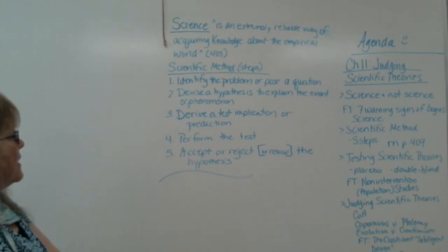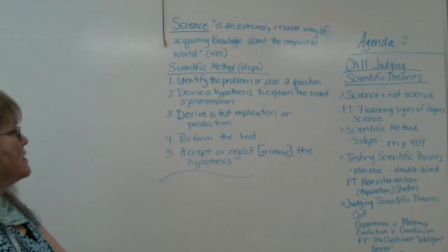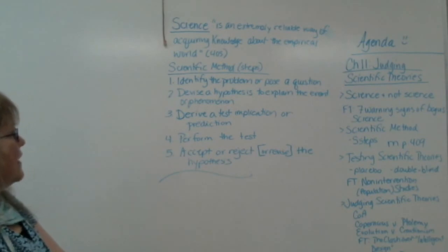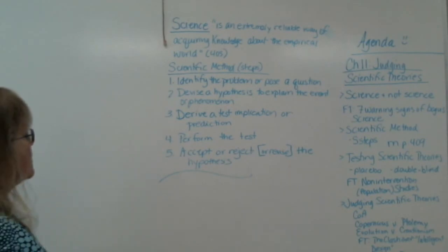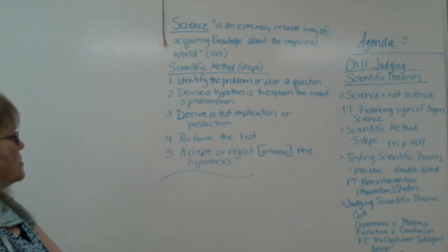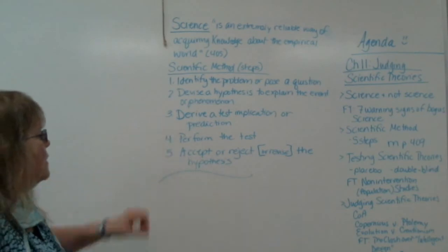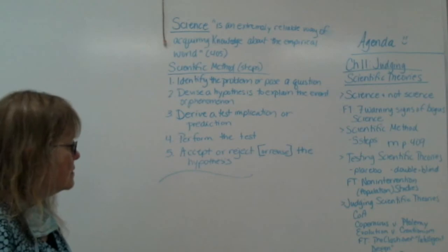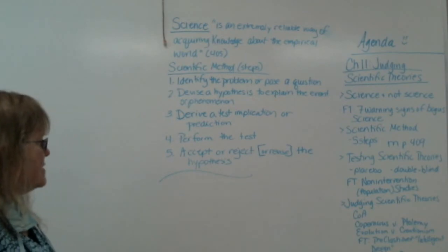The scientific method has five steps - this is what you need to put on your test. First, identify the problem or pose a question. Second, devise a hypothesis to explain the event or phenomenon. Three, derive a test implication or prediction, and we're going to talk about that a little bit more. Four, perform the test. Five, accept or reject or revise the hypothesis.